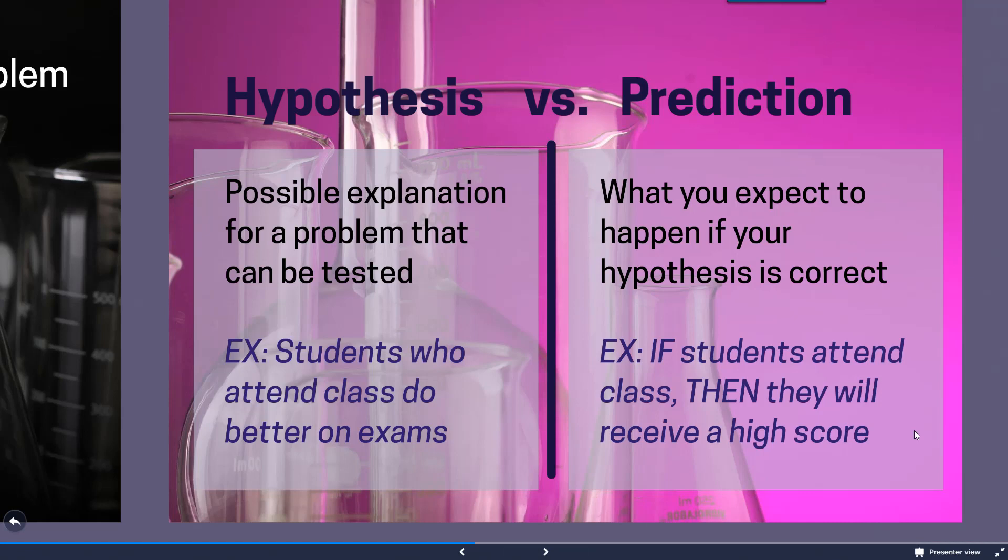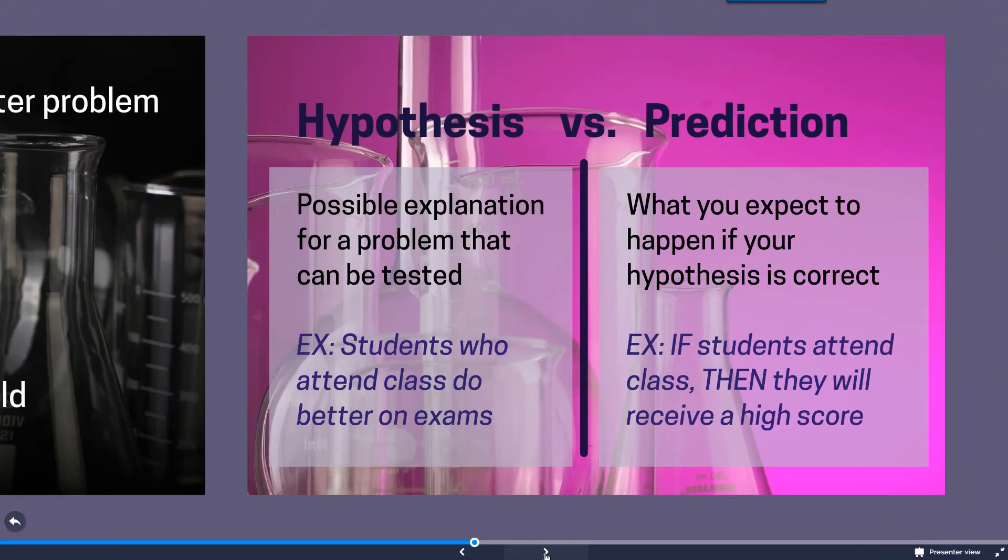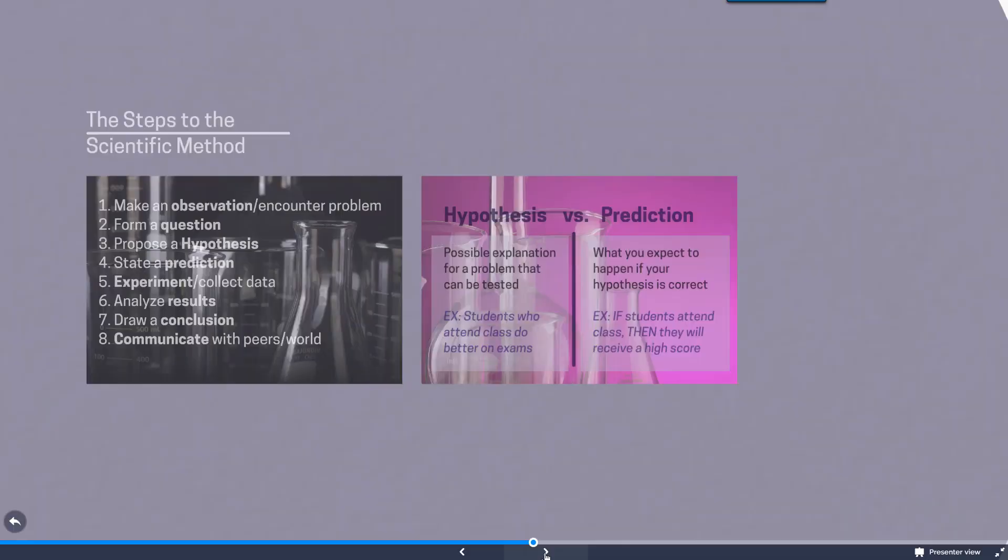The prediction would be what you expect to see happen if your hypothesis is correct. So if students attend class then they will receive a high score on their exams. It's important to note the difference between those two.